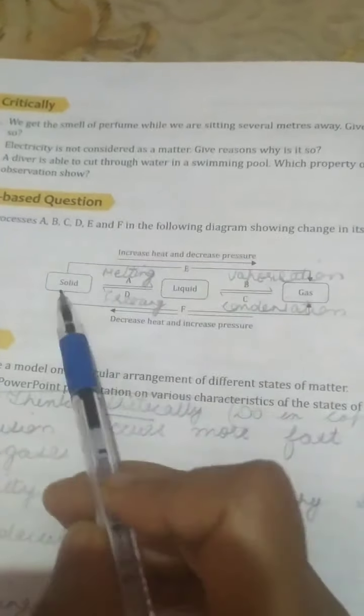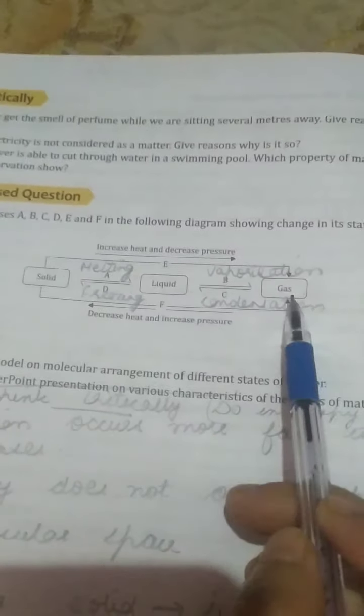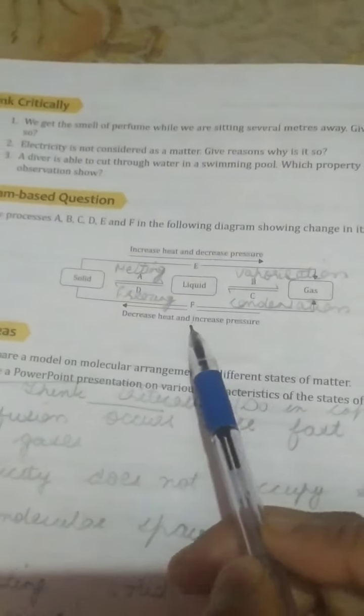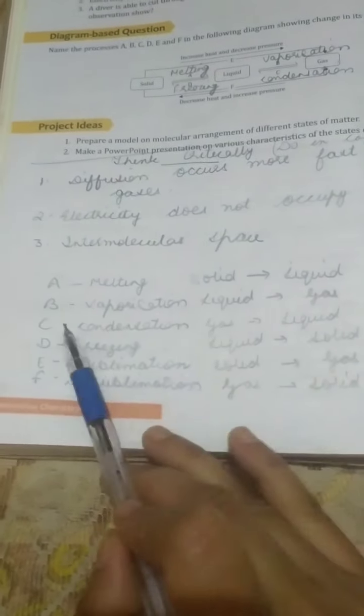Then from solid to gas directly, that is E: sublimation. And from gaseous state to solid means desublimation. So I have written here: A melting means solid to liquid, B vaporization from liquid to gas, C condensation from gas to liquid, D freezing from liquid to solid, E sublimation means solid to gas, and F desublimation, that is gas to solid. Students, this part you have to write in the copy.